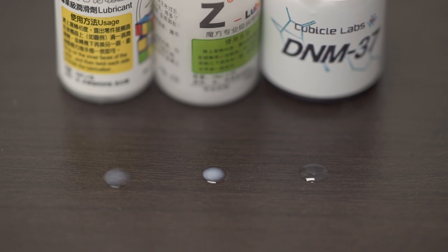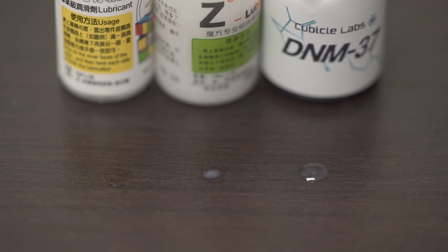The thinking behind DNM37 was to make a piece lube that enhances speed and lasts for a long time. Maro and Z-Lube both accomplish the first part, but they don't last very long, especially if you're cubing a lot.